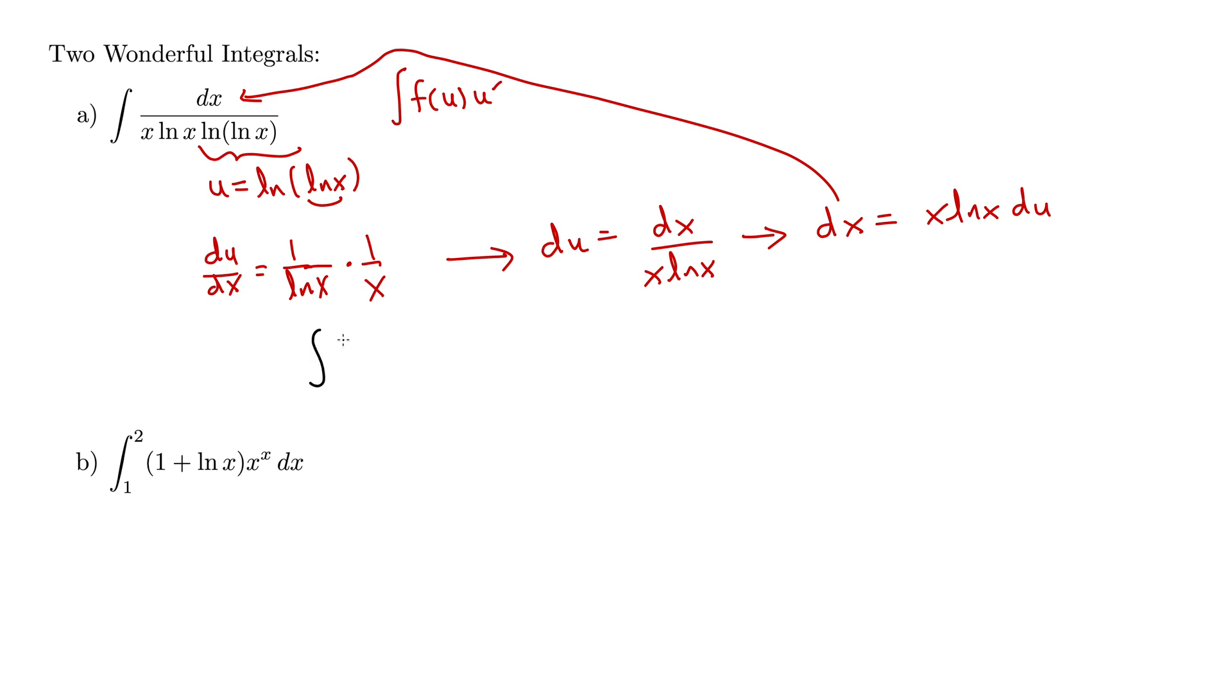We have the integral of, that would bring us to 1 over u du. Well, the integral of 1 over u is natural log absolute value of u plus c. But then remember that our u is actually natural log of natural log of x, so we have natural log of the absolute value of natural log of natural log of x, all plus c. And that is indeed a wonderful integral.